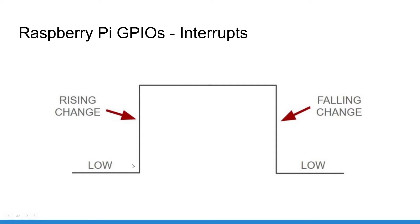We don't care about the state here or the state here — we care about the change of state. When the signal goes from low to high, you have the rising event. When the signal goes from high to low, you have the falling event. And 'both' is another option that is going to be triggered on both rising or falling.